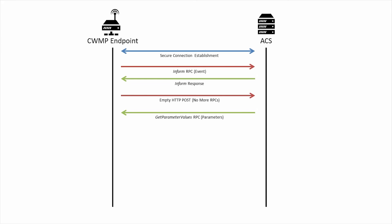The ACS begins to send remote procedure calls to the CPE, such as the get parameter values RPC. The CPE sends its get parameter values response in an HTTP POST with the information the ACS was looking for. This ends the get parameter values RPC.